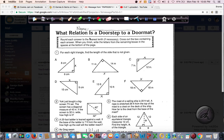Again, what relation is a doorstep to a doormat? Alright, good question. Round each answer to the nearest tenth if necessary. Cross out the box containing each answer. When you finish, write the letters from the remaining boxes in the spaces at the bottom of the page.